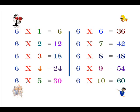Six sixes are thirty-six. Six sevens are forty-two. Six eights are forty-eight. Six nines are fifty-four. Six tens are sixty.